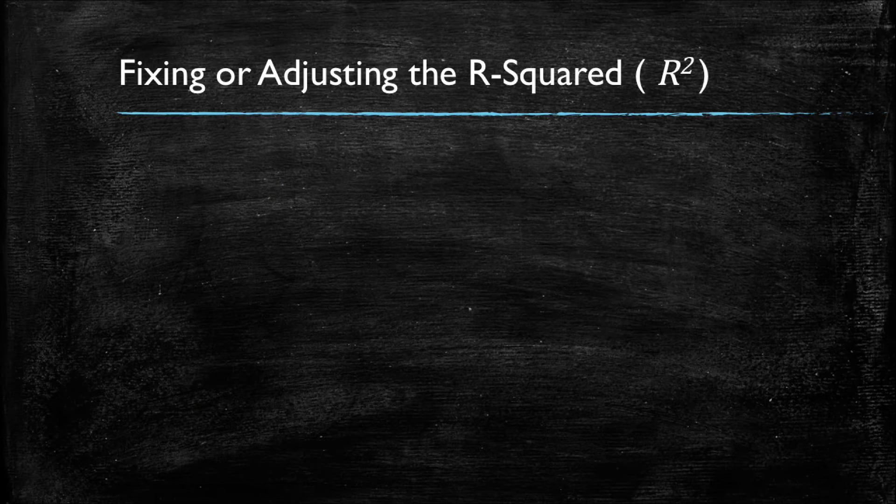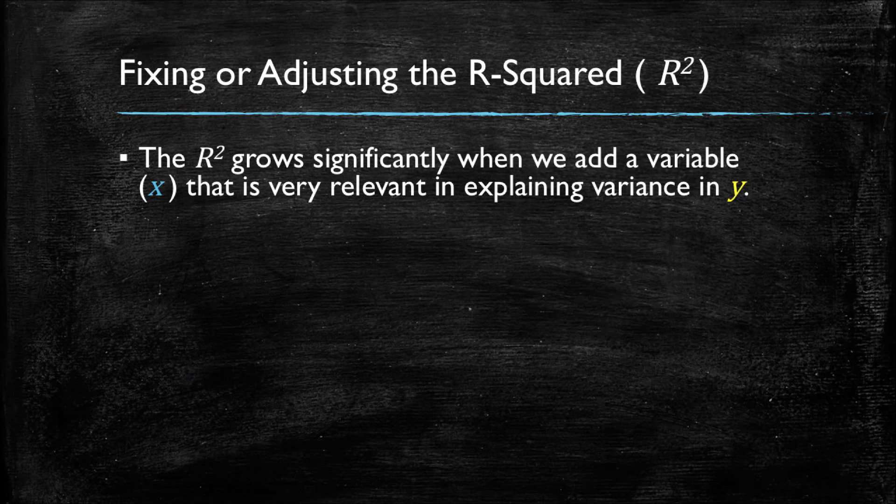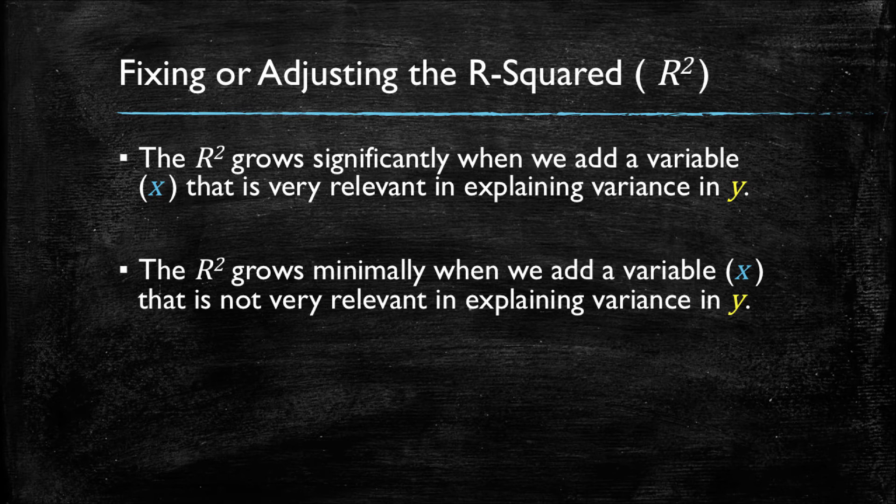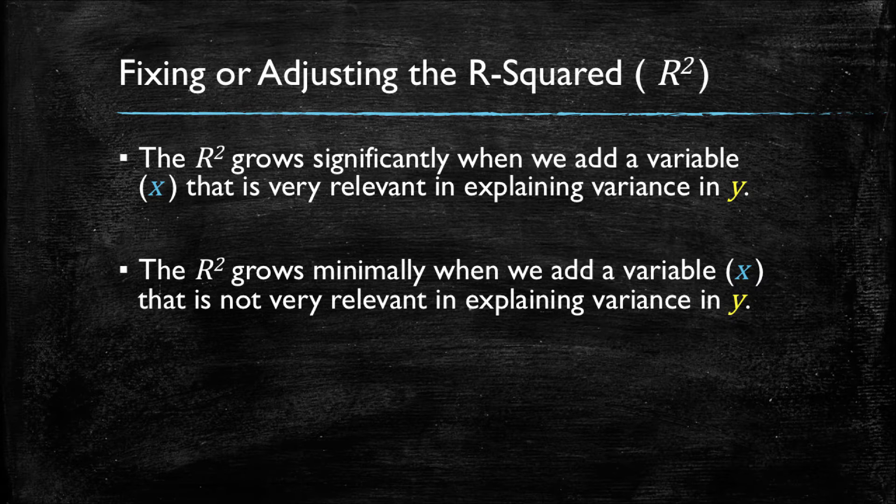In thinking about how could we improve the r-squared as our measure, let's recall that the r-squared grows whenever we add a variable that is relevant in explaining the variance in y. But on the other hand, the r-squared will only grow minimally, that is, only a little bit, if we add a variable that is not that relevant really in explaining the variance in y.